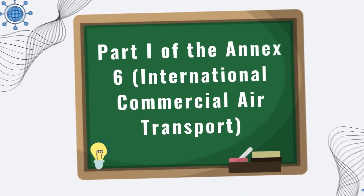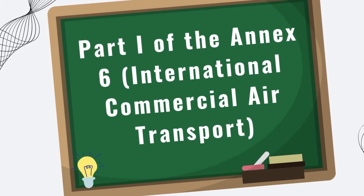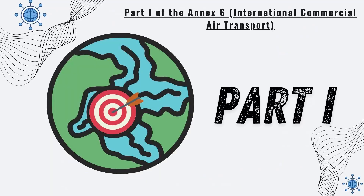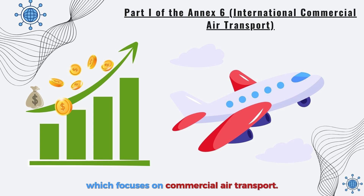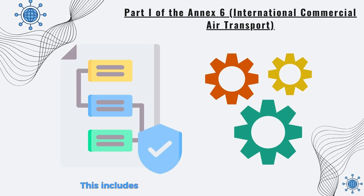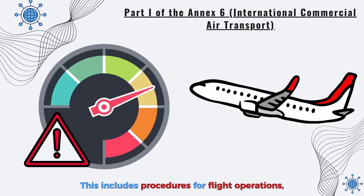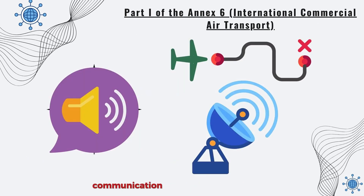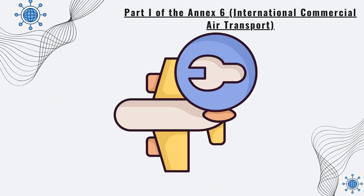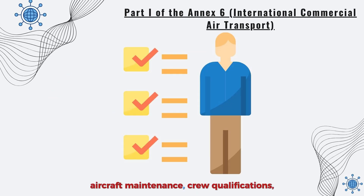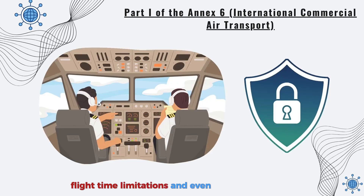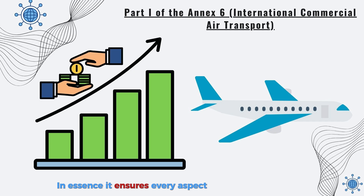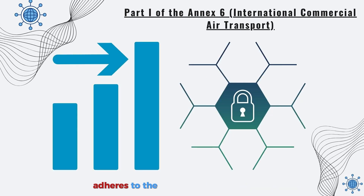Let's continue with Part 1 of Annex 6, International Commercial Air Transport. This part focuses on commercial air transport and covers procedures for flight operations, performance limitations of aircraft, essential equipment and documentation, communication and navigation systems, aircraft maintenance, crew qualifications, flight time limitations, and cabin crew safety. In essence, it ensures every aspect of a commercial flight adheres to the highest safety standards.